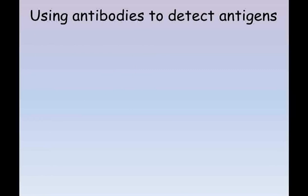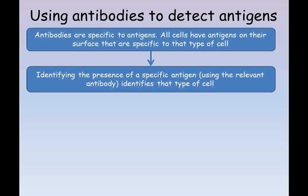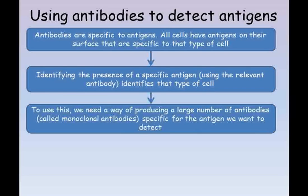Antibodies, as we have seen, are specific to an antigen. This means if we have an antibody and it binds to a cell, that cell must have a specific antigen present on it. Because cells have different antigens on them, we can use this as a way of identifying and targeting specific types of cells, such as cancers. The idea is that an antibody specific to an antigen only found on cancer cells will attach itself to that cancer cell, which would allow doctors to identify the cancer and also to target treatment to those cells. For this to work, a large number of identical antibodies are needed, and these are known as monoclonal antibodies.